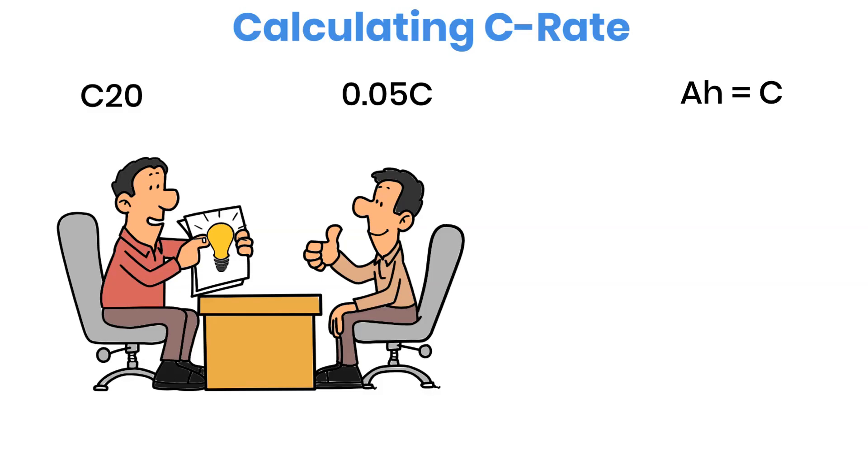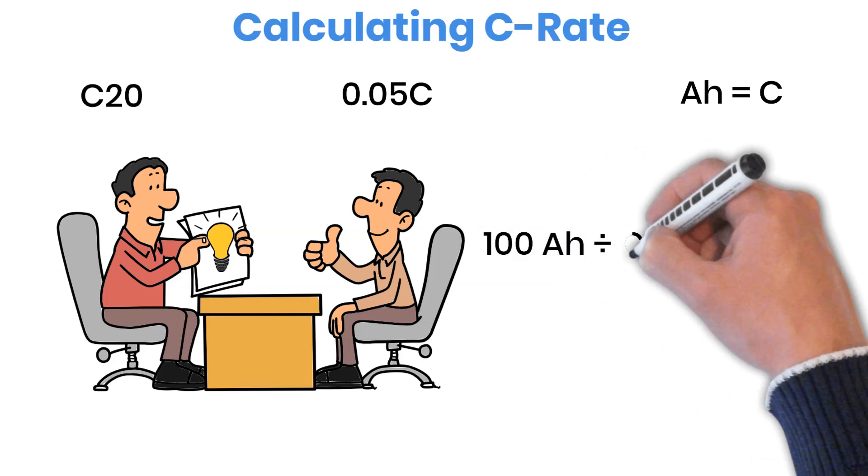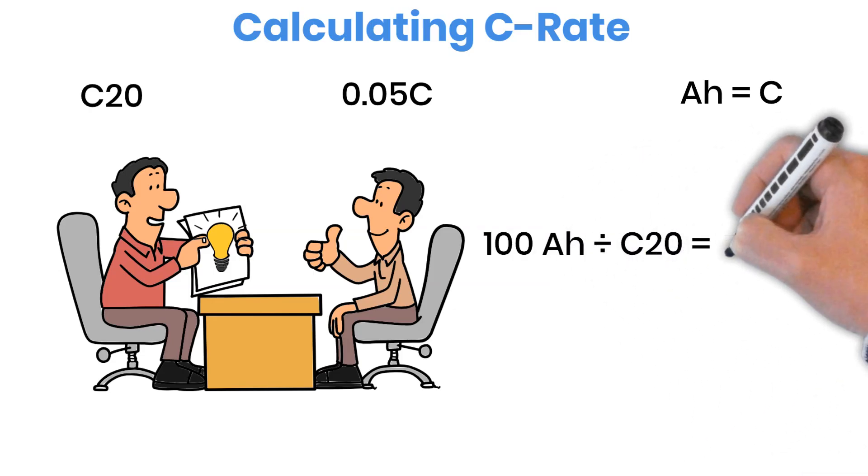Let's start with a simple example using a lead-acid battery. If a battery is rated at 100 ampere-hours and marked as C20, it means you take the battery's capacity and divide it by 20, so this battery can be charged or discharged at 5 amps under that rating.